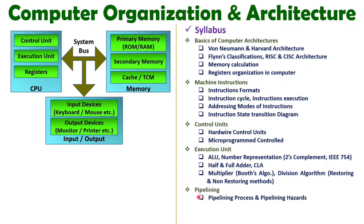In the fifth unit I have explained pipelining. Pipelining is also part of the CPU, and by having parallel execution of instructions you can improve the performance of the CPU. That is what I have covered along with examples in this playlist.